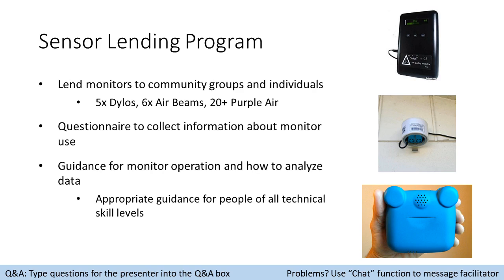When people apply for the sensor loan, they fill out a quick questionnaire to get an idea of their interests and their question. We contact them after that and usually have a phone call or chat over email to get a feel for what they're trying to learn. Sometimes in that conversation we find out there are existing resources that can help them — maybe another agency or a fire department that can help with an outdoor burning complaint. And sometimes sensors are the right tool, and we ship them the sensors with information on how to operate them, how to analyze the data, and how to think about sensor use as a kind of mini scientific study.